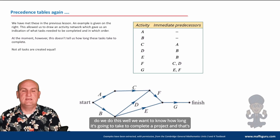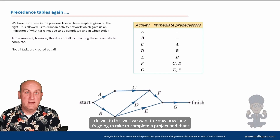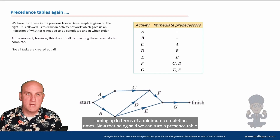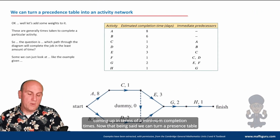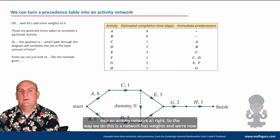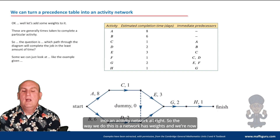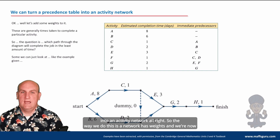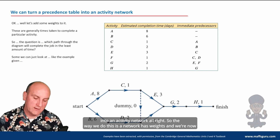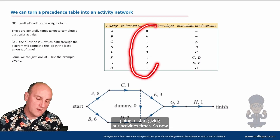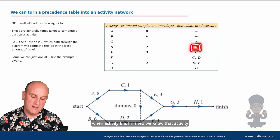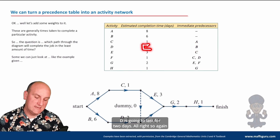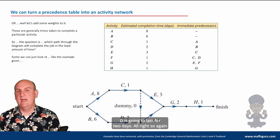Why do we do this? We want to know how long it's going to take to complete a project — that's coming up in terms of minimum completion times. We can turn a precedence table into an activity network, and a network has weights. We're now going to start giving our activities times, so not only do we know what order activities must happen, we know how long each takes.